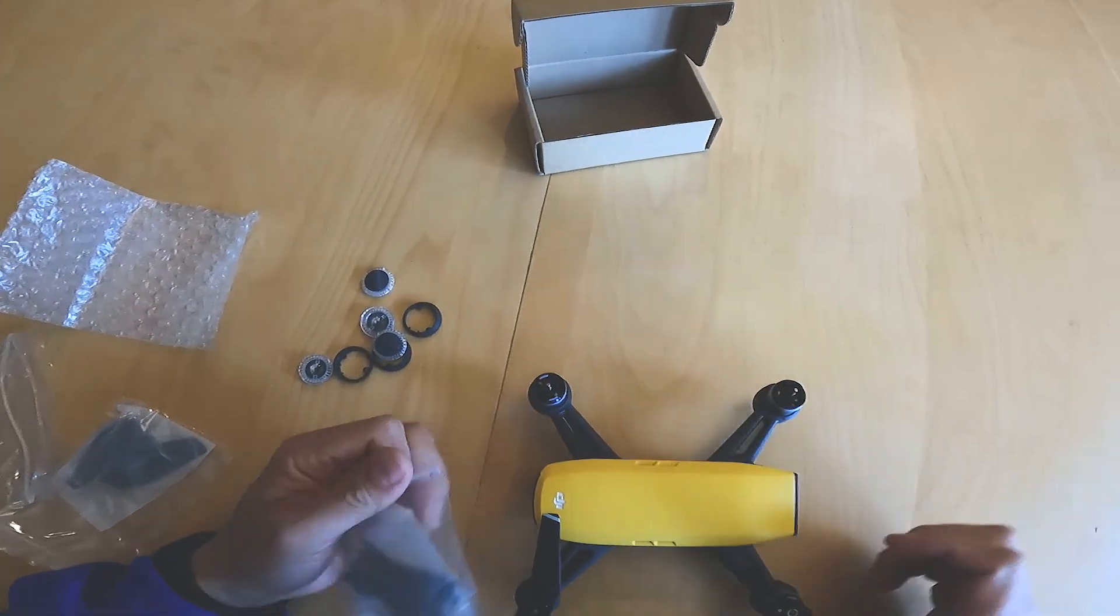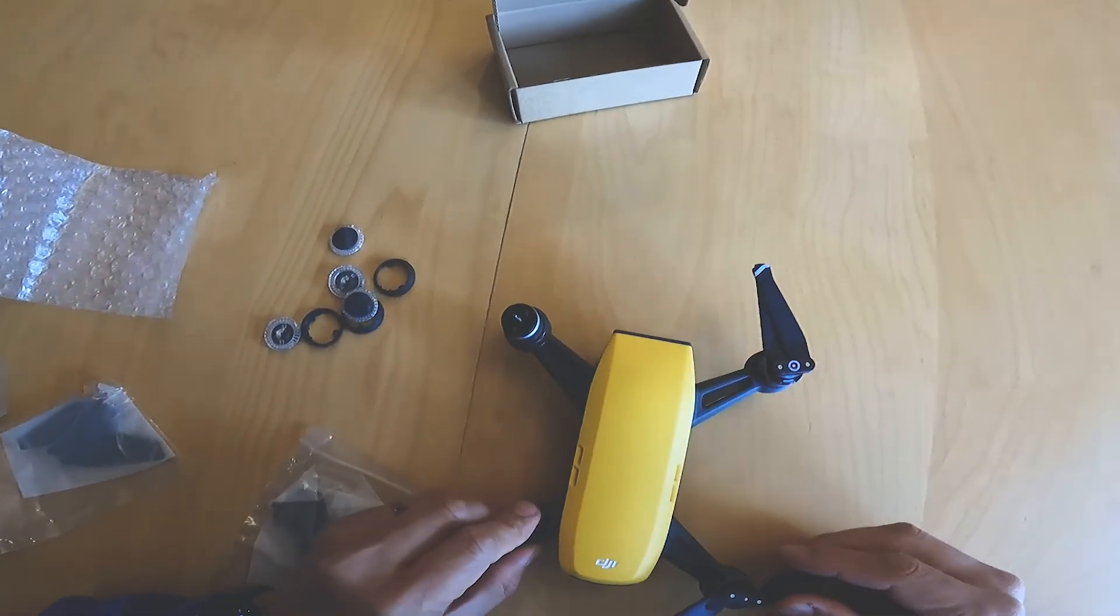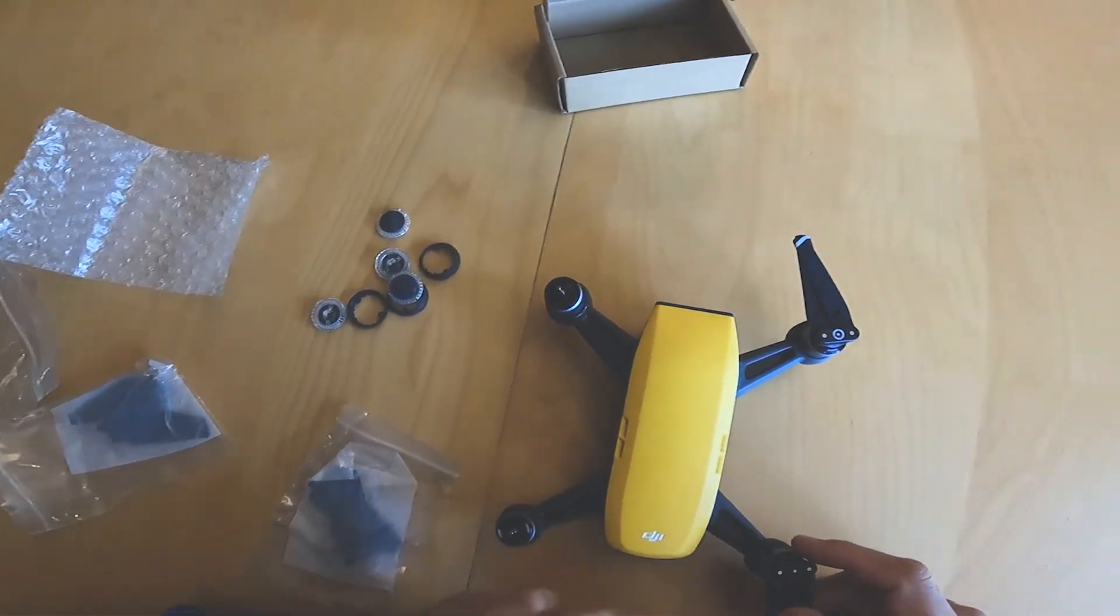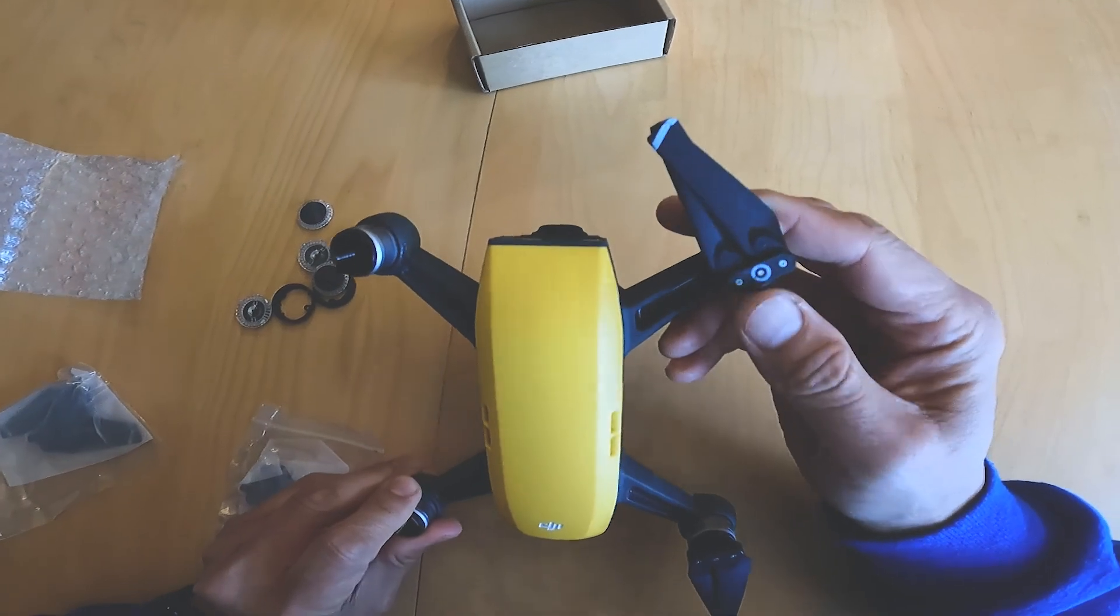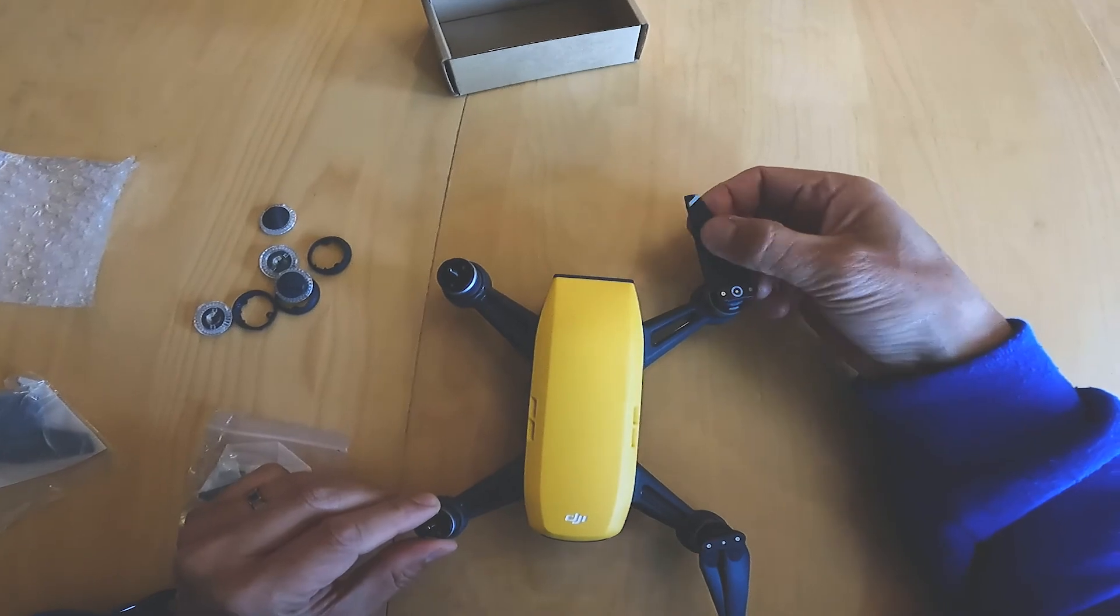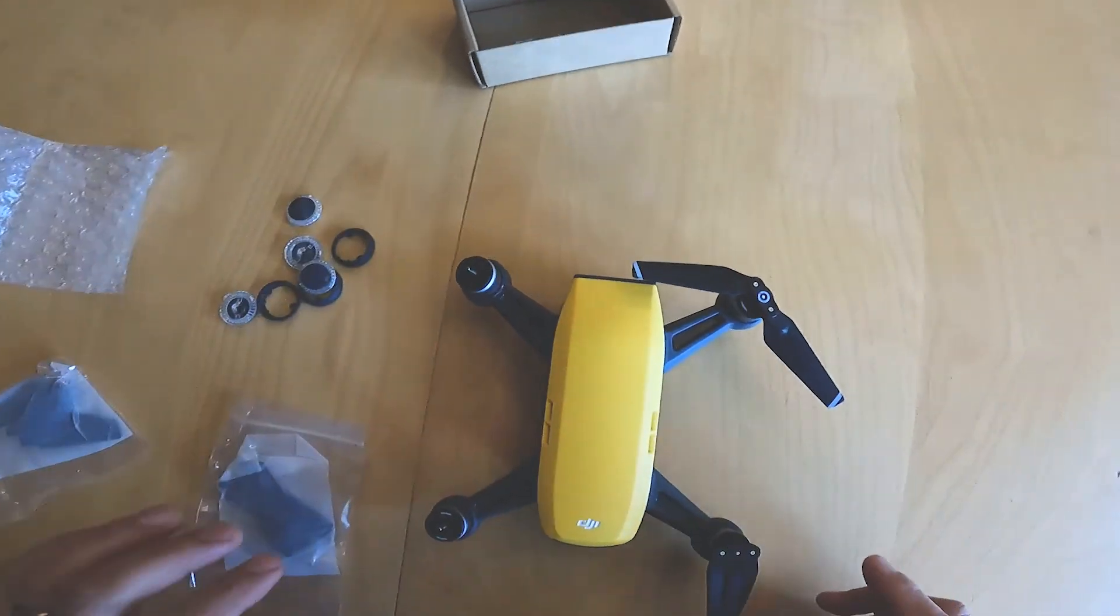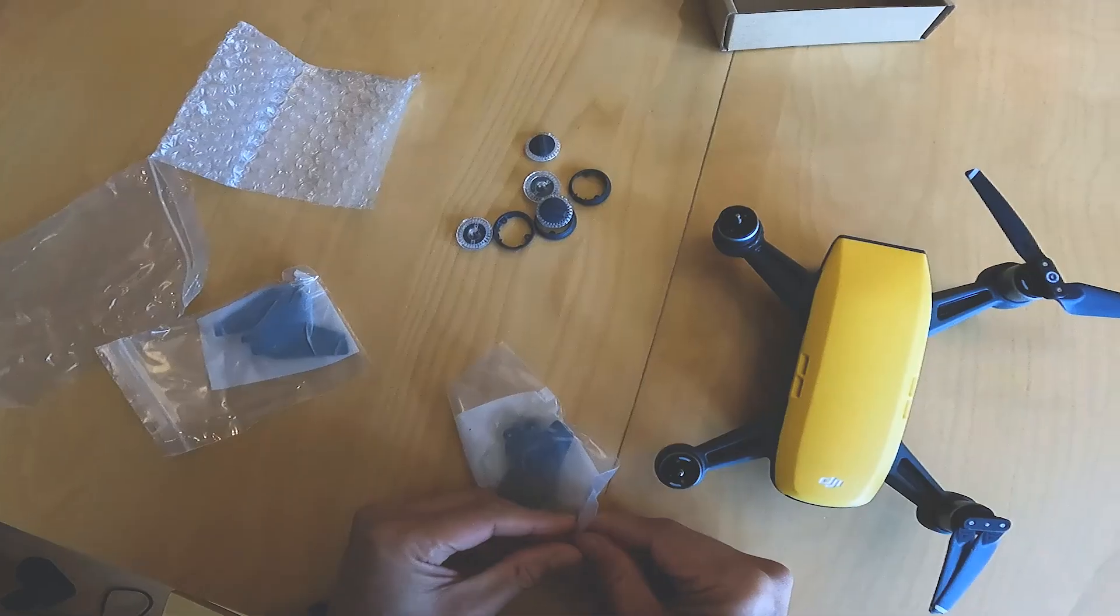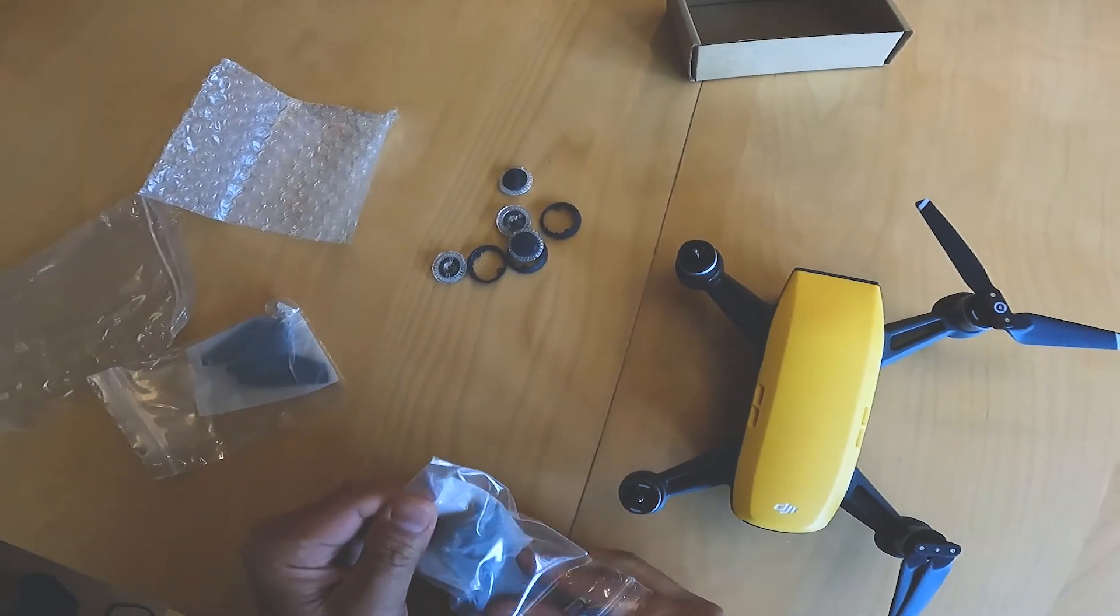So the most important thing to do when you're looking at the propellers is to see which of these propellers have this white marking here. There's a circle and also a white marking at the base. Those are going to need a certain type of propeller and the other ones are going to need the other type. Looks like I'll need one of each in this case.